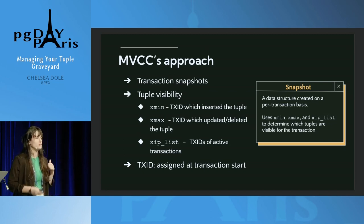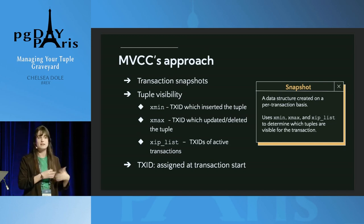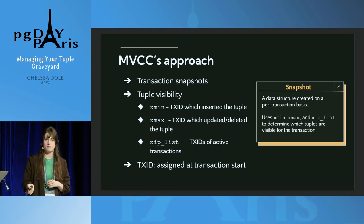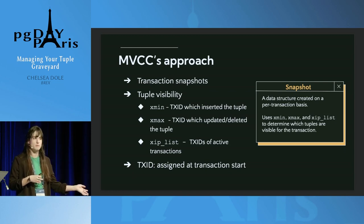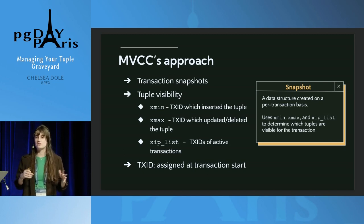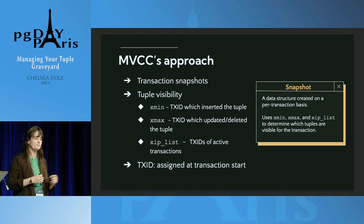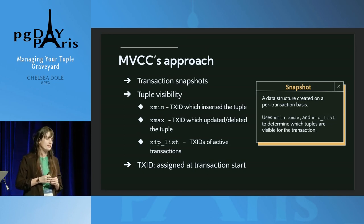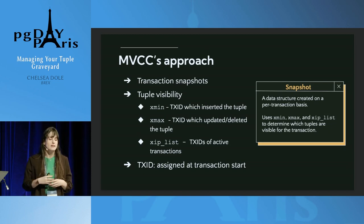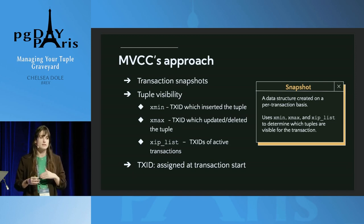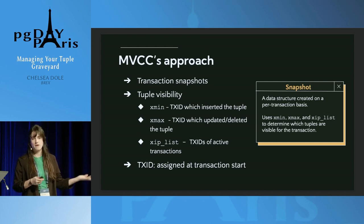These three columns in tandem define what is within and without the view of that individual transaction. Xmin is the transaction ID which inserted the tuple. Xmax is either zero/null, meaning it's not deleted or updated, or the transaction ID that performed that action. XIPList is an array of currently running transactions that are up in the air. Transaction ID, which is only assigned to transactions that edit data, is assigned at transaction start, not on commit — which is why you need something like XIPList.